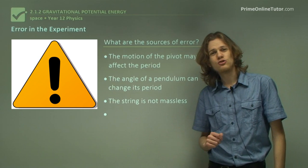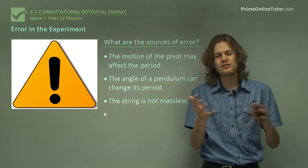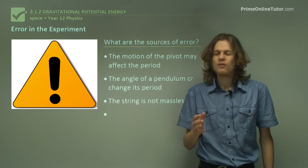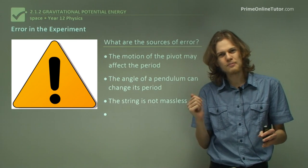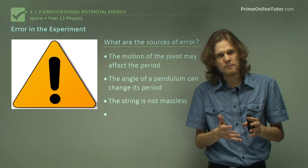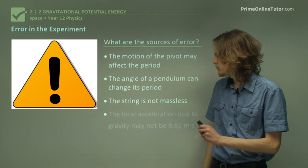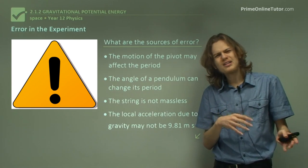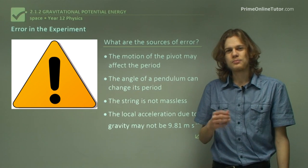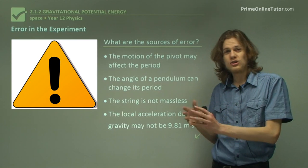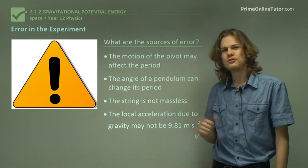Another option is that the string is not massless. For an ideal pendulum, the string weighs nothing and therefore has no effect on the acceleration of the mass at the end. In real life, the string is not massless, meaning we actually have a pendulum with quite a long effective length, and that will affect the period because it moves differently from an ideal pendulum. Finally, the local acceleration due to gravity might not be exactly 9.81 — it might be 9.80 — which would explain results not matching the expected value. That said, the discrepancy is large enough that one of the earlier error sources is more likely the cause.